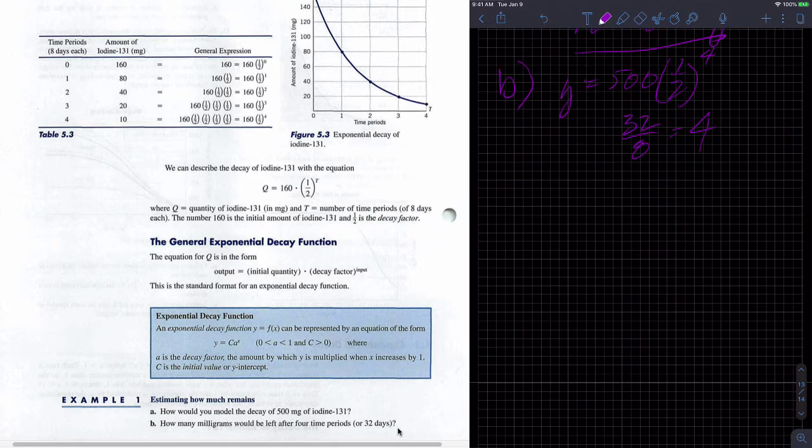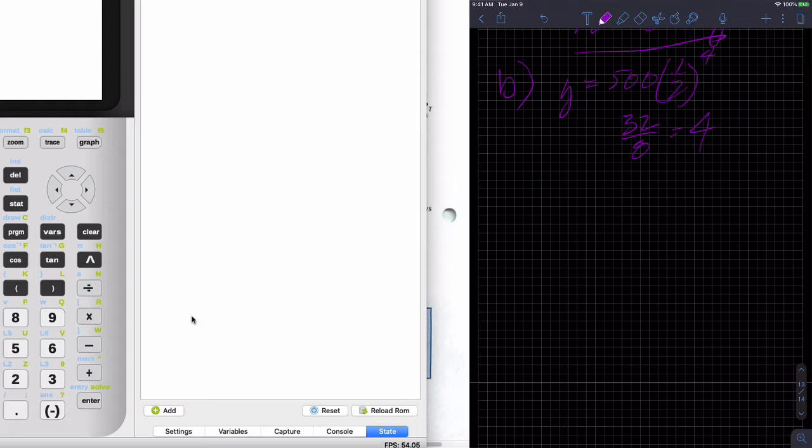So once we put that in our calculator, that would look like this, 500 times one-half raised to the four. And so I get 31.25. So 31.25 is how much I would have after four time periods.